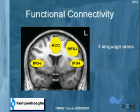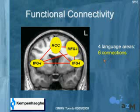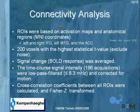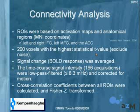Therefore, we were interested in functional connectivity, and we chose to use the four main language areas: the anterior cingulate cortex, the medial frontal gyrus left, and the inferior frontal gyrus left and right. So we have four language areas, giving us six connections. The ROIs we used were drawn based on the activation maps, and we also used an atlas to ensure the anatomical regions were correct. We then obtained the 200 voxels within each ROI with the highest statistical T-value, and this was to exclude noise.